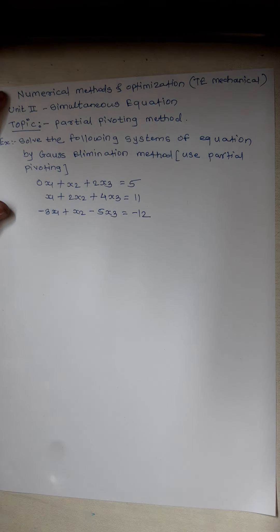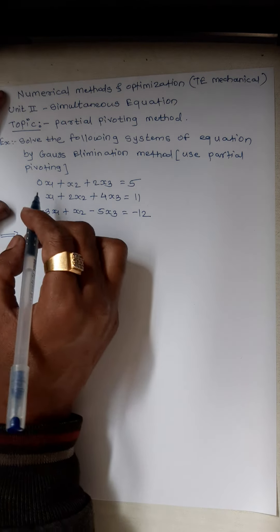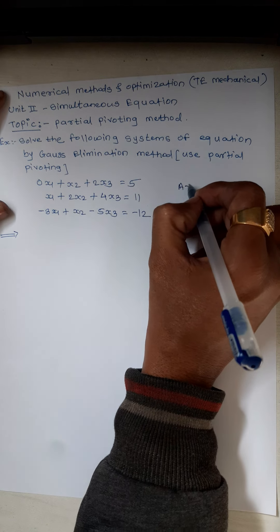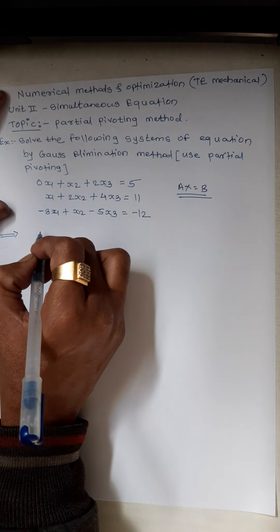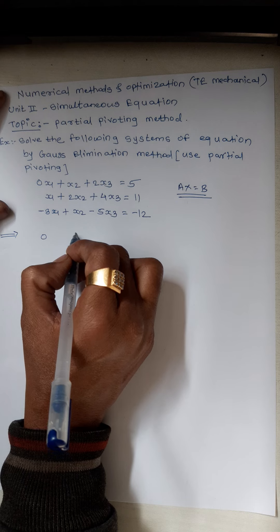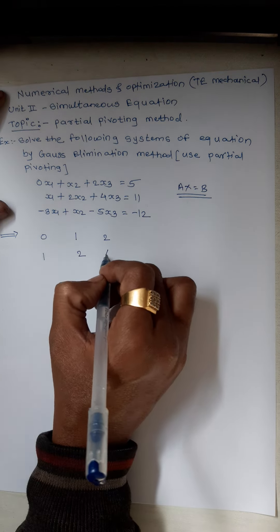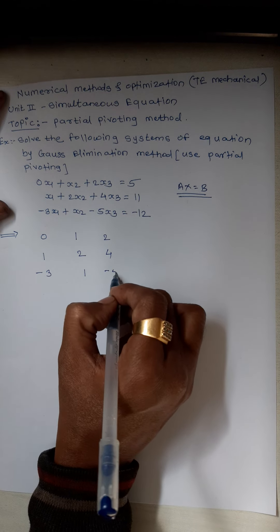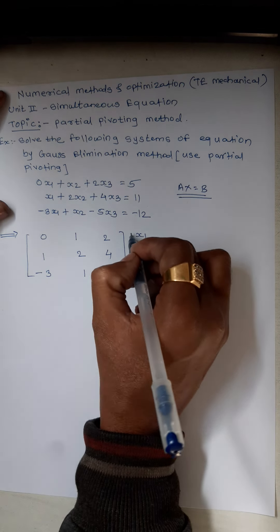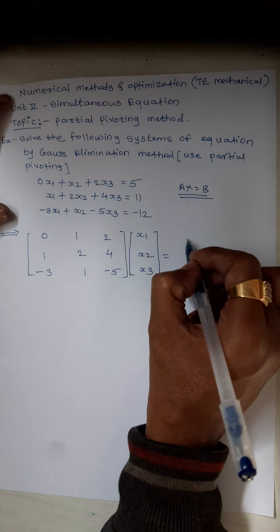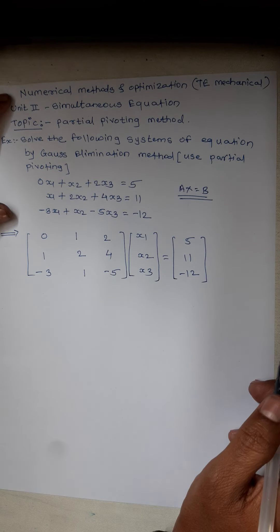Students, these set of equations are given. In partial pivoting, write down these equations in the form Ax = b, that is in matrix form. The coefficient matrix has entries: row 1: [0, 1, 2], row 2: [1, 2, 4], row 3: [-3, 1, -5], multiplied by [x1, x2, x3] equal to [5, 11, -12].